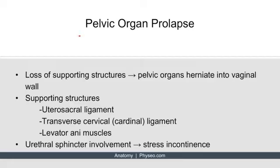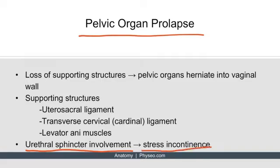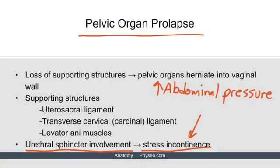This is the pelvic organ prolapse slide we introduced in the previous lecture. If the urethral sphincter is ever involved in this pathology, the patient will experience stress incontinence. Stress incontinence means that any abdominal pressure will lead to the leakage of urine, and this abdominal pressure can come in the form of coughing or the Valsalva maneuver.